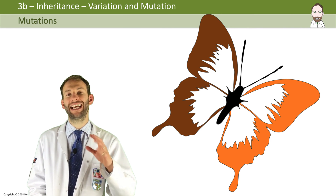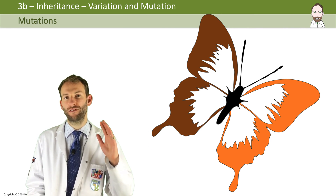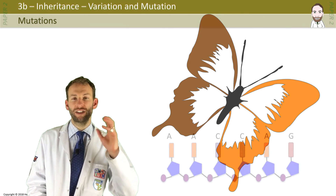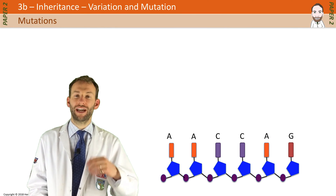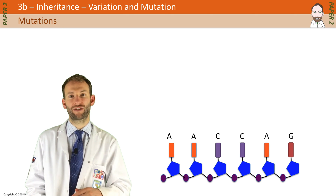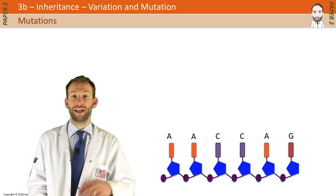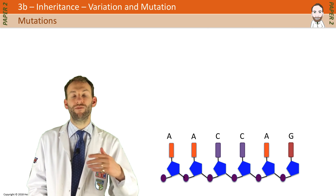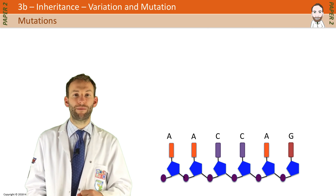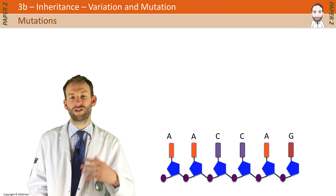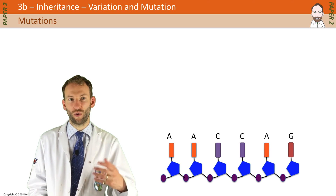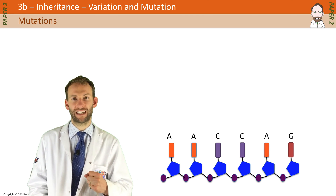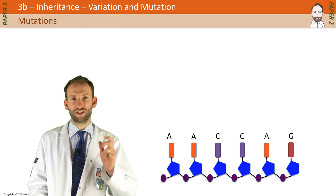Sometimes a gene can mutate — this is called gene mutation. A mutation is a rare, random change in your DNA. Remember your DNA is a code, a sequence of bases: A's, T's, C's, and G's. That code can change, and if that happens it could be passed on to the next generation. It could create a new allele — that's how new alleles occur and how we get evolution happening. However, most mutations don't really have any effect, or they can sometimes be quite serious and lead to things like cancers.